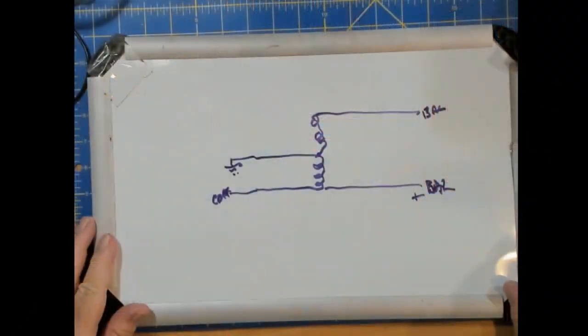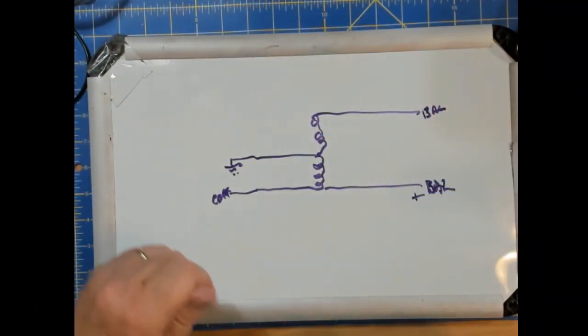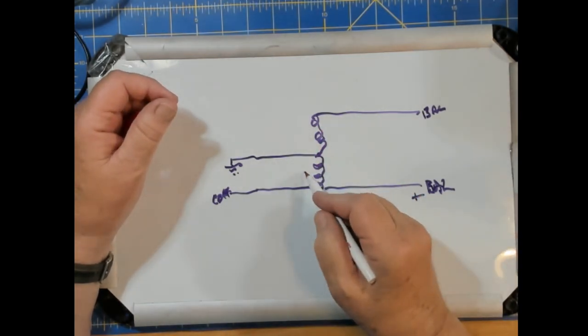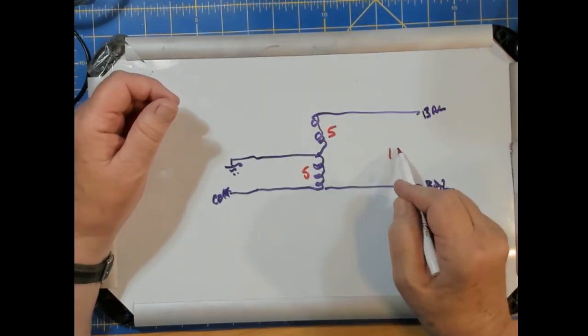Okay, so let's take a look at how we do these baluns. Okay, here's a balun, and this has got an equal turns ratio. Let's say there are 5 here and 5 here for a total of 10.